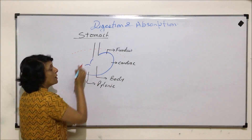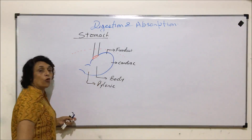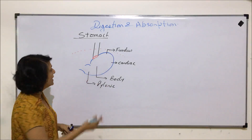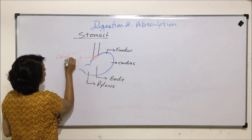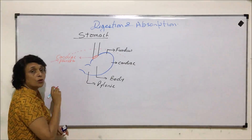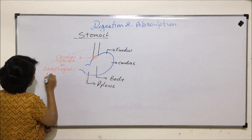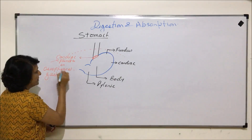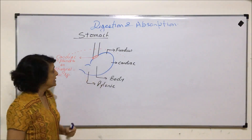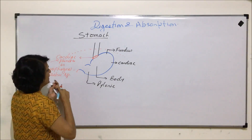When we talked about the esophagus, we said esophagus opens into the stomach — that opening is called the esophageal-gastric opening, and it is guarded by a sphincter. This sphincter is called the cardiac sphincter, or also the esophageal-gastric sphincter, because it is at the junction of the esophagus and stomach. The term 'gastric' is used for stomach.